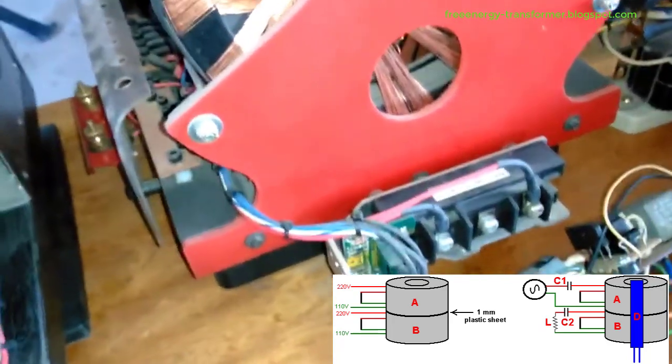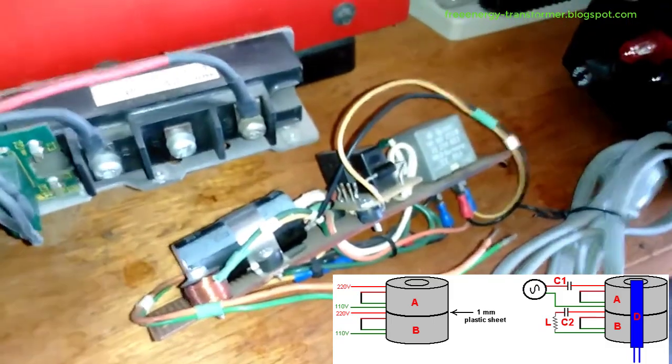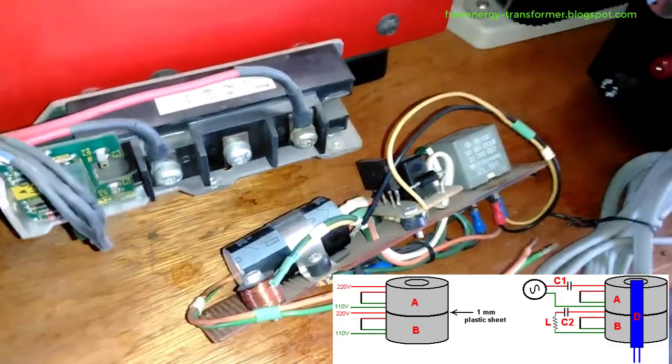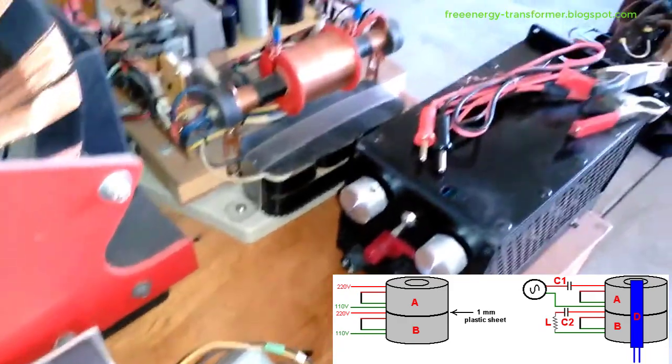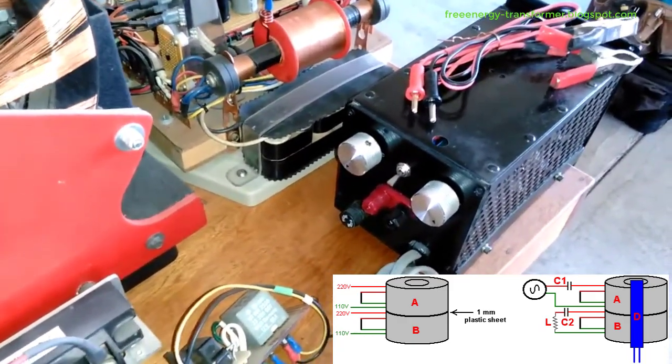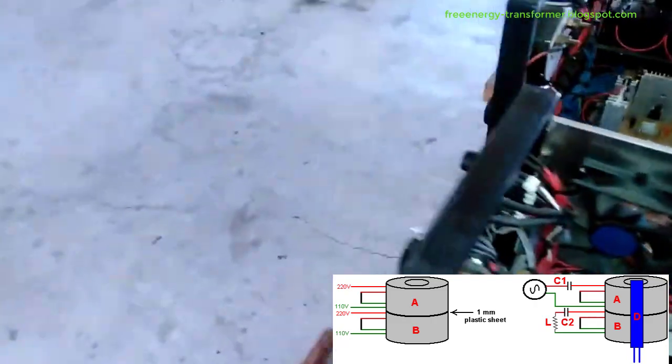The primary innovation in Alex's design is the apparent absence of back EMF effects on the primary coil. This unique characteristic challenges the traditional understanding of energy transfer in transformers. Unlike standard configurations, any increase in output current draw does not result in a proportional increase in the current flowing through the primary coil. This deviation from conventional transformer operation hints at a new paradigm in energy transfer.